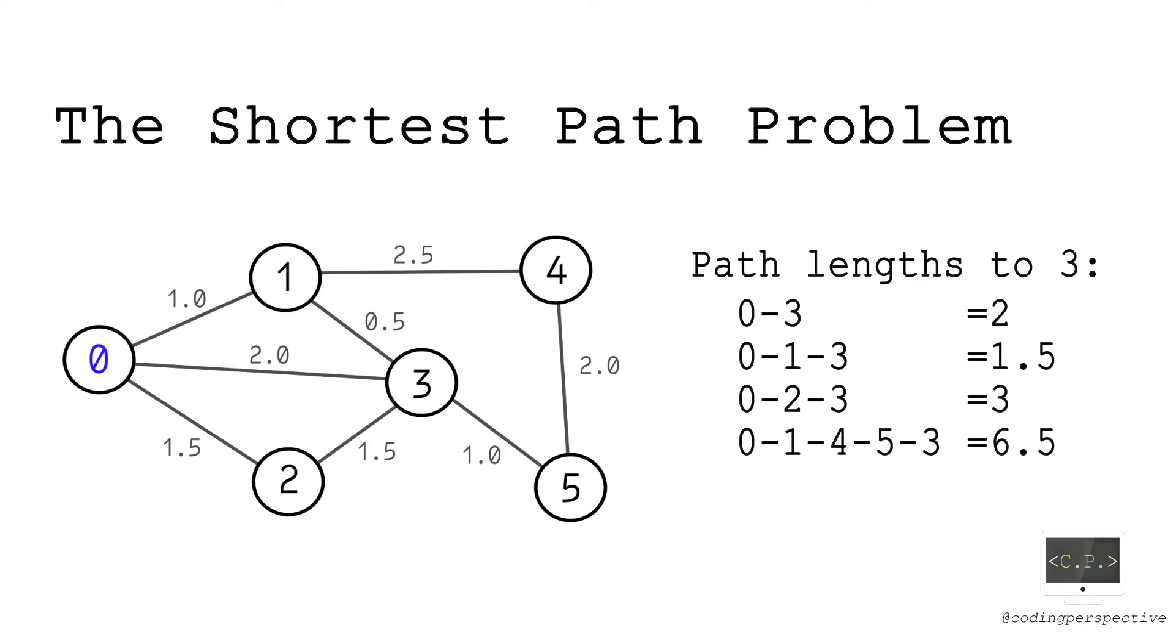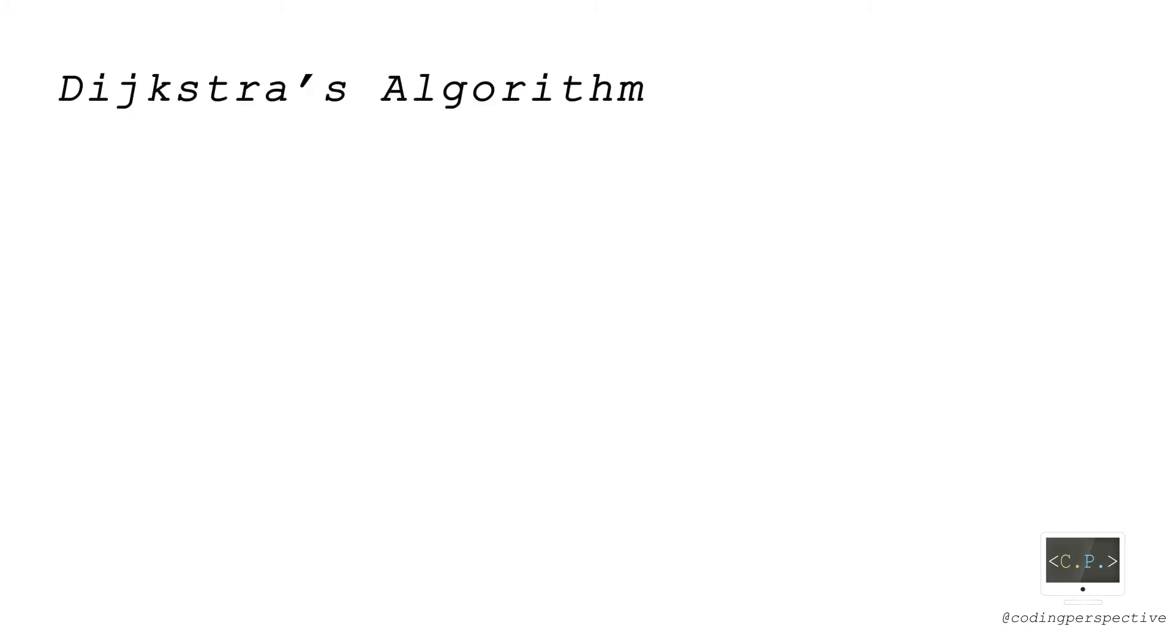As you see, the shortest path from source node, node zero in this case, to node three is zero one three with the length of one point five. To solve this problem for each node when the weights of the edges are non-negative, let me introduce you Dijkstra's algorithm.